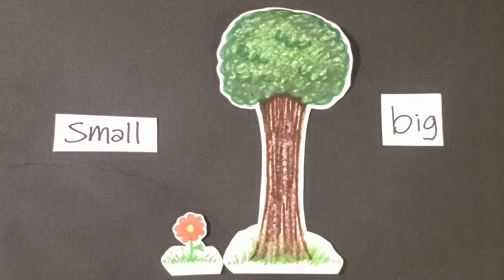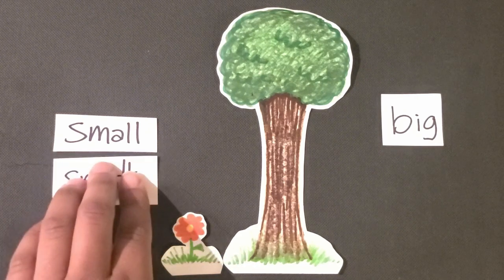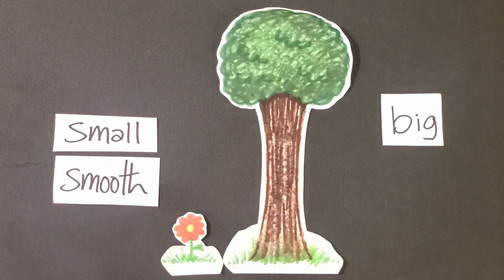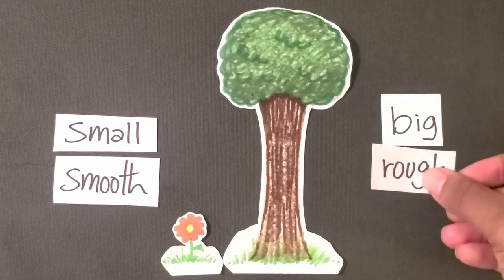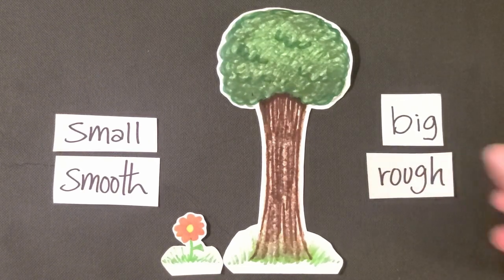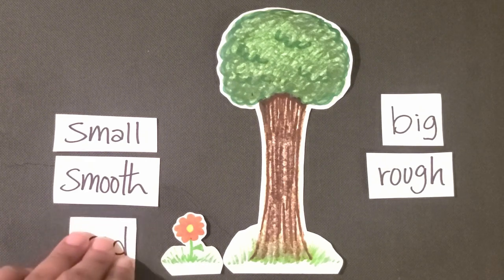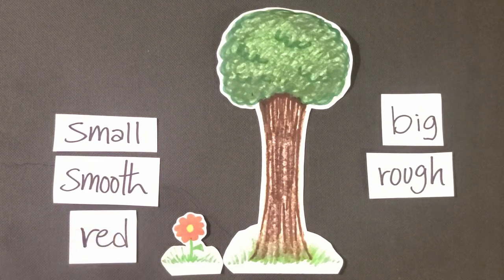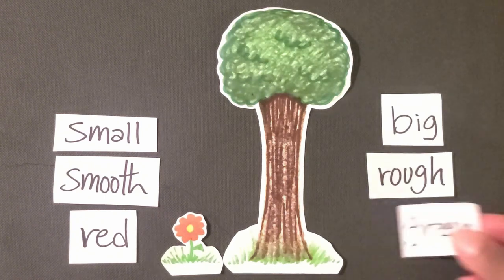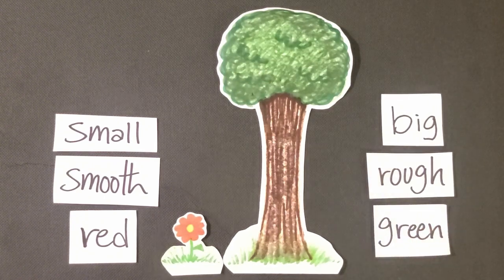Then you could say, the flower's stem is smooth and the tree trunk is rough. The child might say the flower is red and the tree is green.